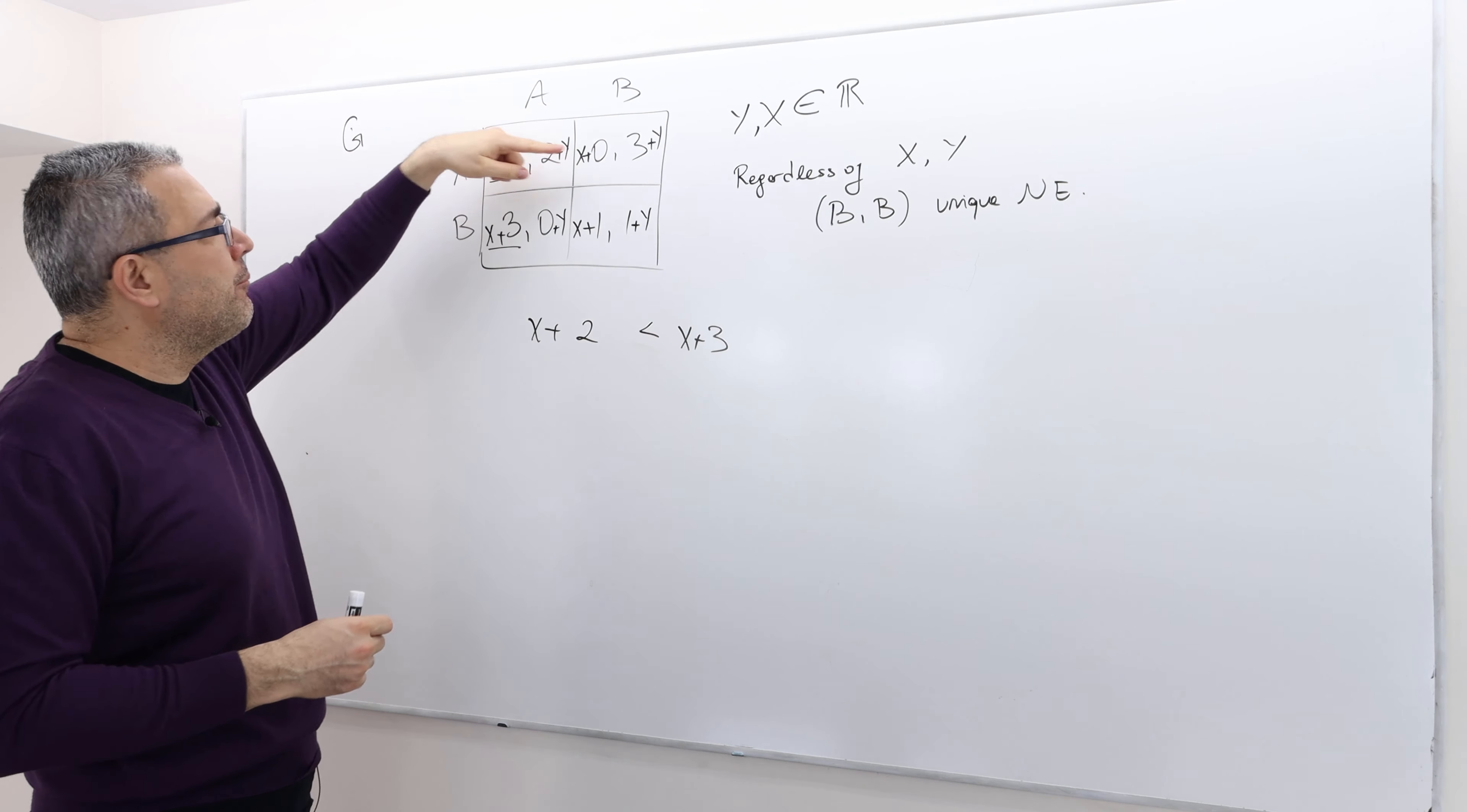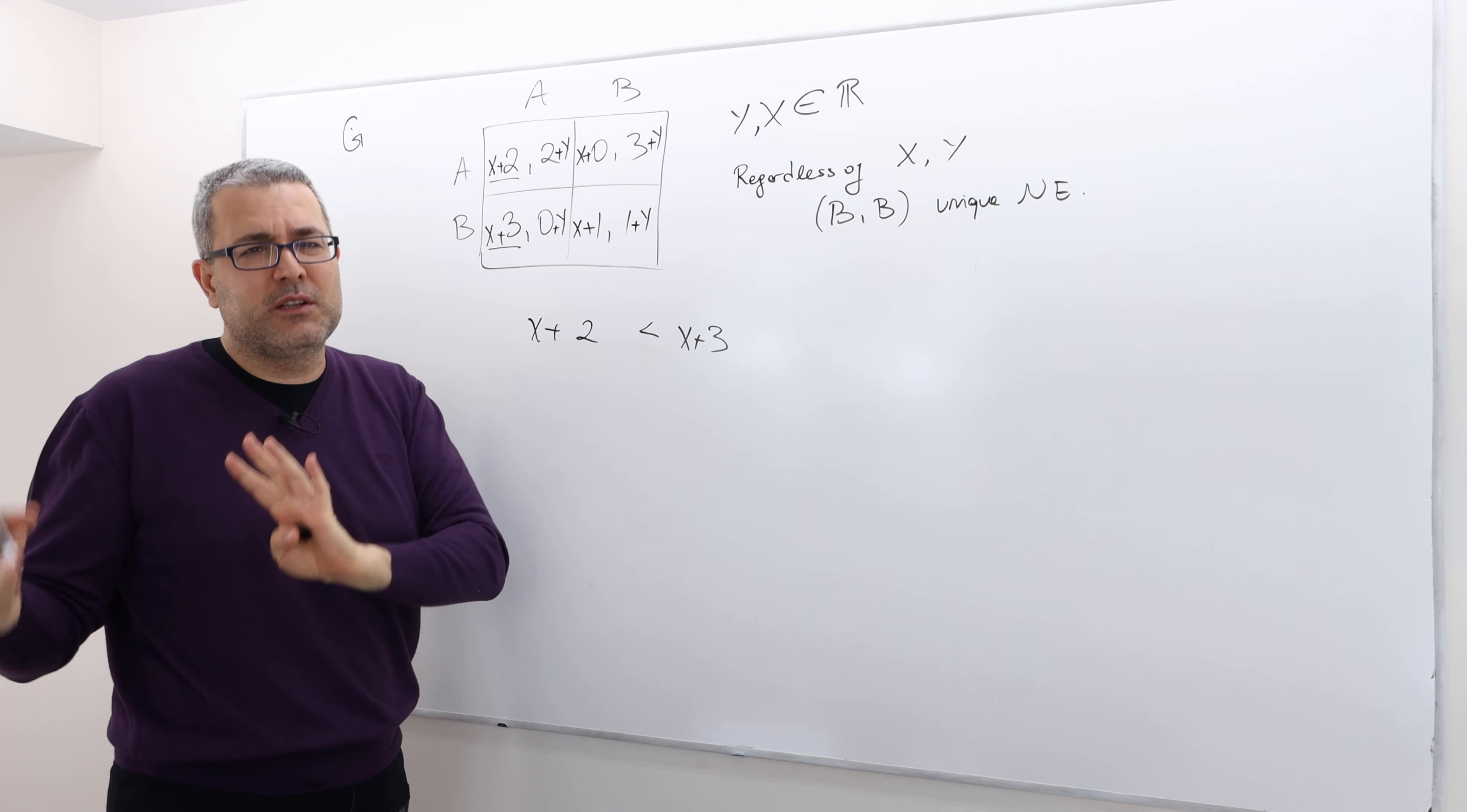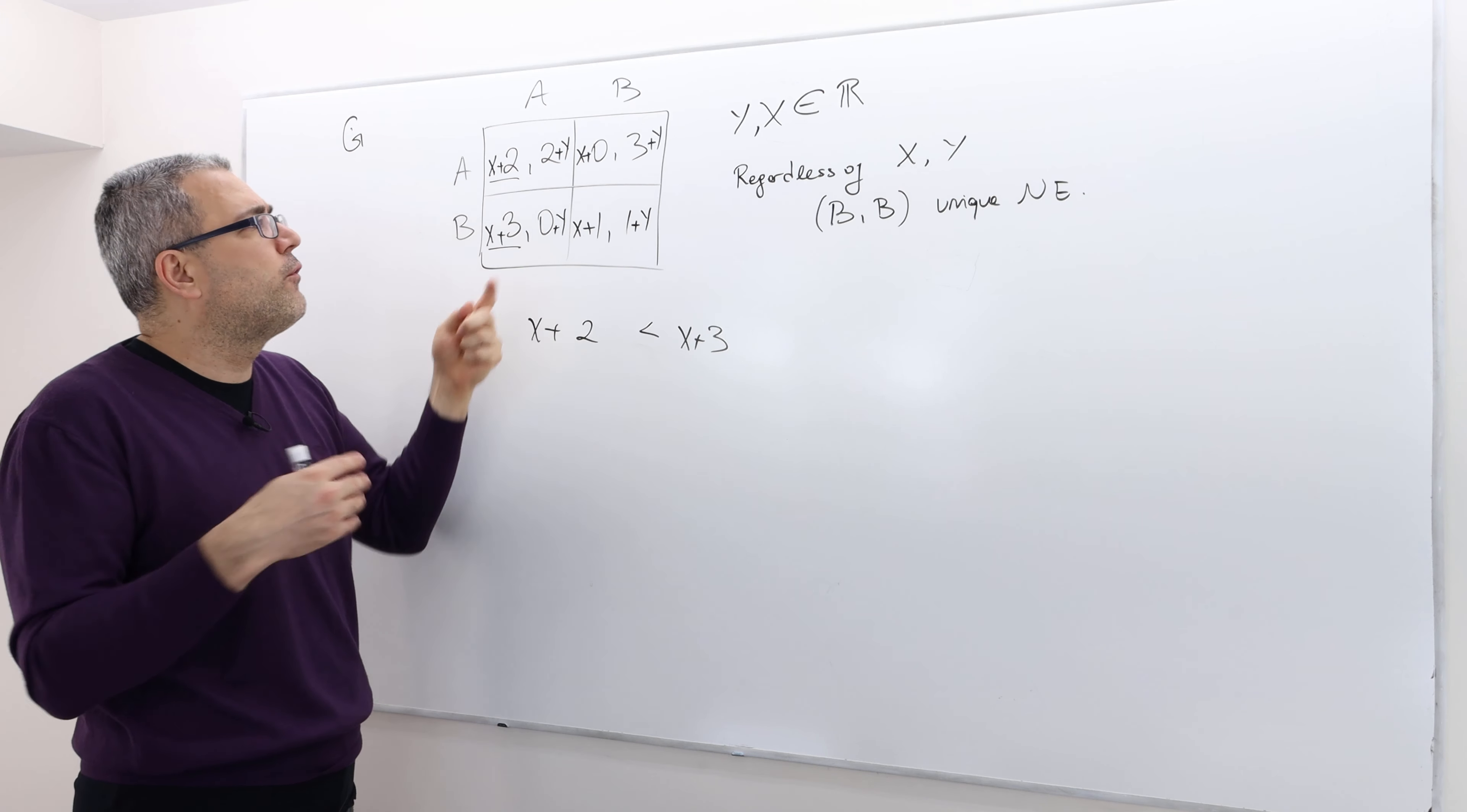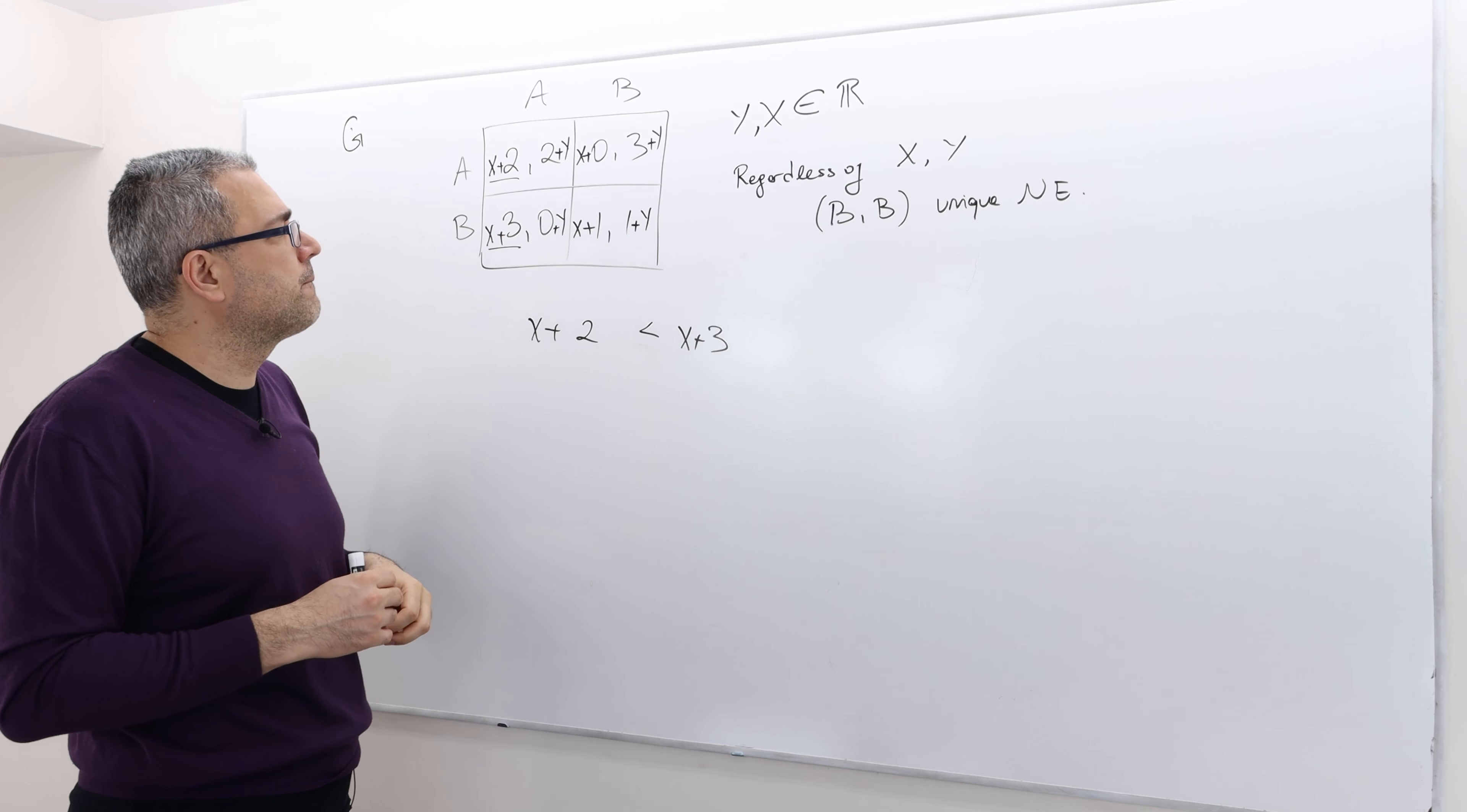So therefore, because I applied or added this X to all possible payoffs of player one at all possible strategy profiles, it is not going to change the best response functions. So therefore, if BB was the unique Nash equilibrium before adding X and Y, well, it still be the unique Nash after adding X and Y. And this is true regardless of the value of X and Y.